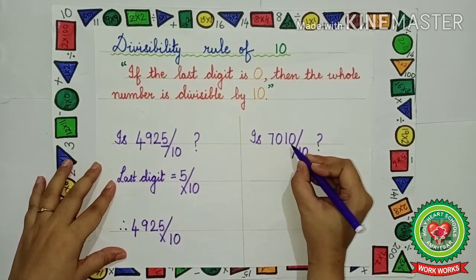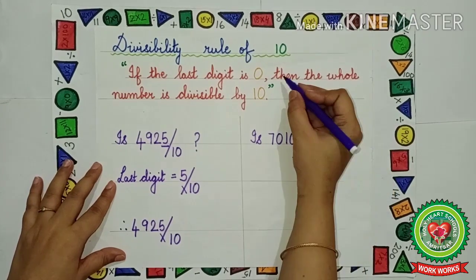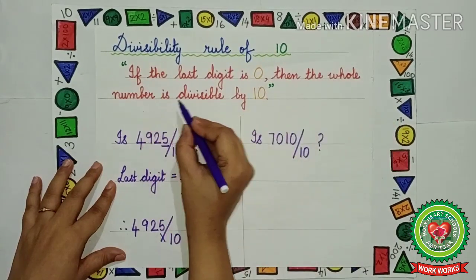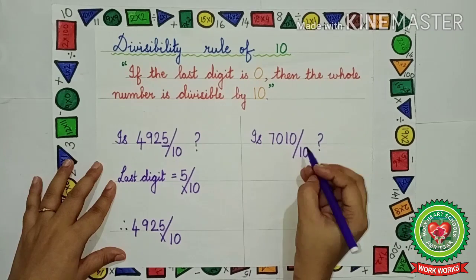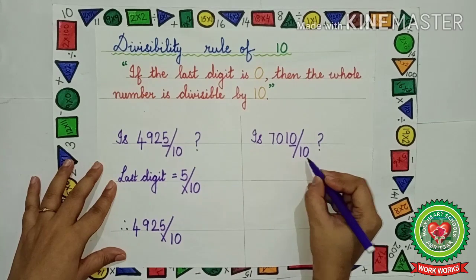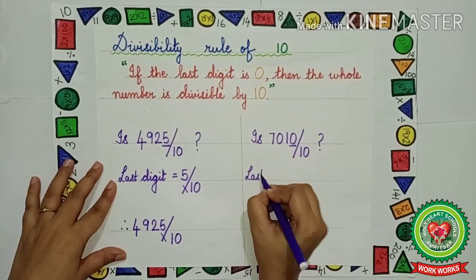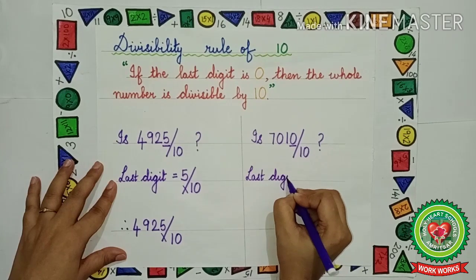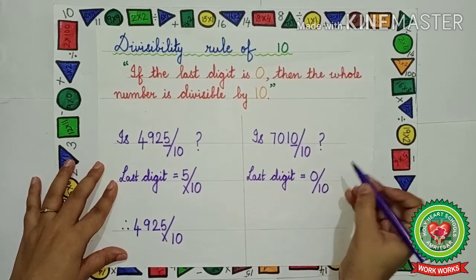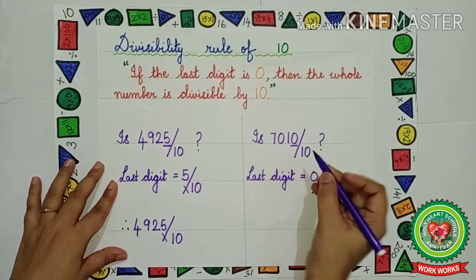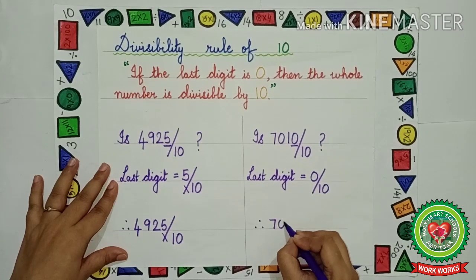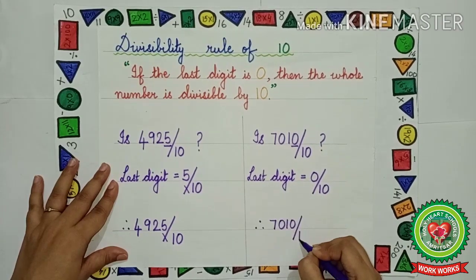Is 7010 divisible by 10? The rule of 10 says if the last digit is 0, then the whole number is divisible by 10. Which is the last digit? That is 0, which means it is divisible by 10. The last digit is equal to 0, so according to the rule, the whole number is divisible by 10. Therefore, 7010 is divisible by 10.